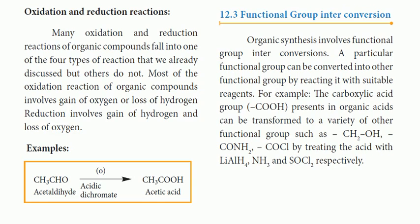When we talk about oxidation, a common reagent used is acidic potassium dichromate. For example, a CH-CHO aldehyde group can be oxidized using acidic potassium dichromate to give acetic acid. The CHO group is an aldehyde group. This is an example of oxidation — addition of oxygen is involved.